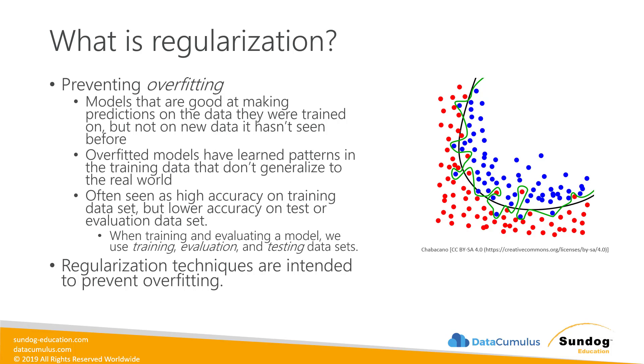So if you see a high accuracy on your training data set, but a lower accuracy on your test set or your evaluation data set, that's nature's way of telling you that you might be overfitting.